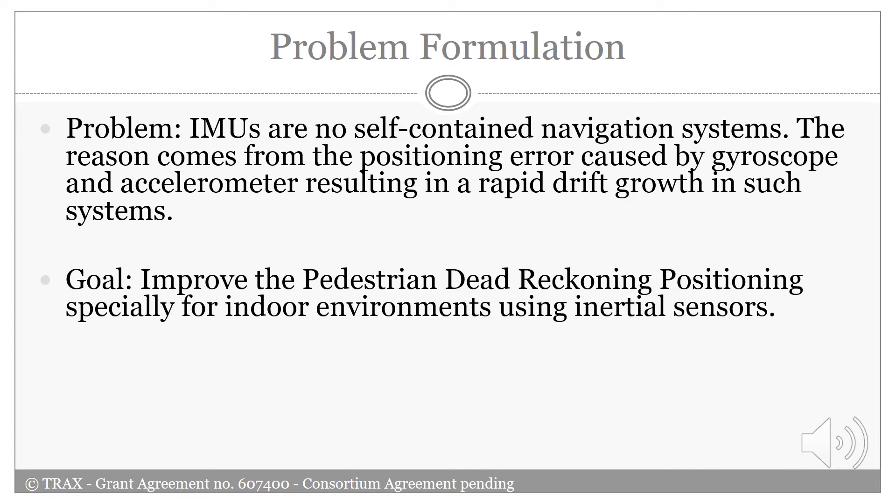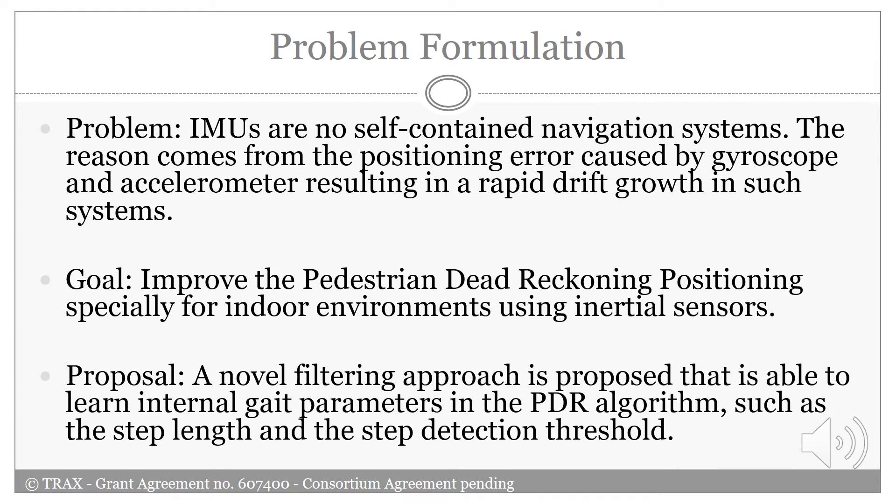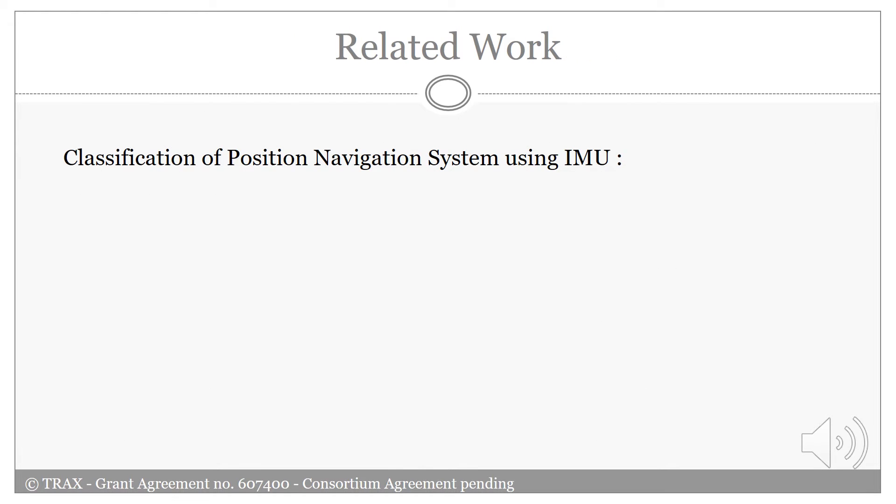The goal of this work is to improve pedestrian dead-reckoning positioning, especially for indoor environments, using inertial sensors. A novel filtering approach is proposed that is able to learn internal gate parameters in the pedestrian dead-reckoning algorithm, such as the step length and the step detection threshold.